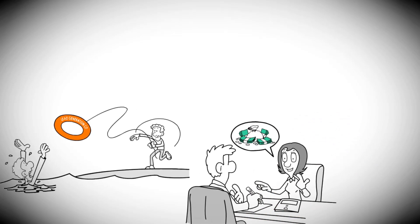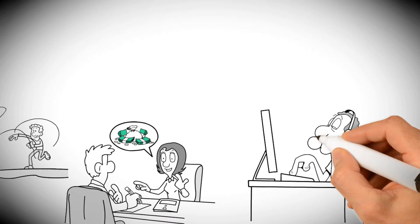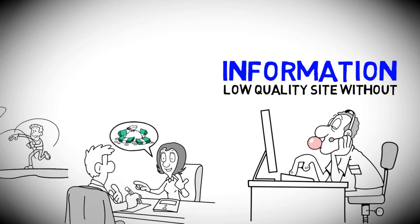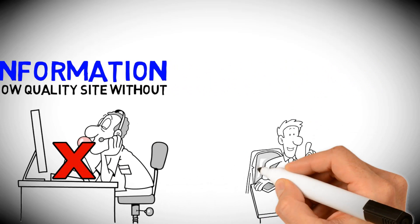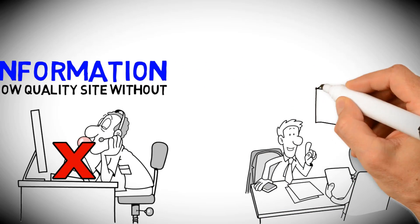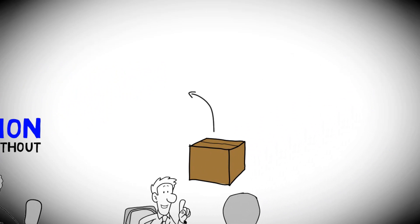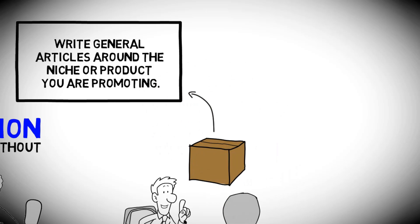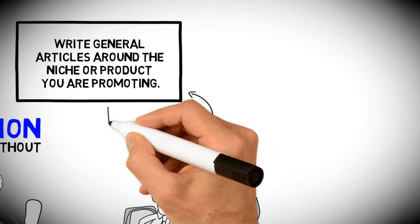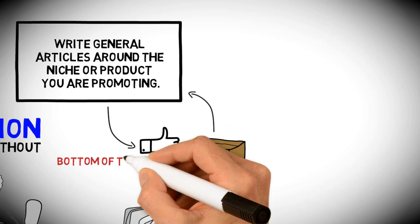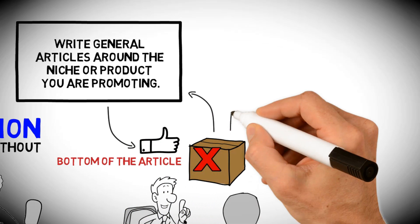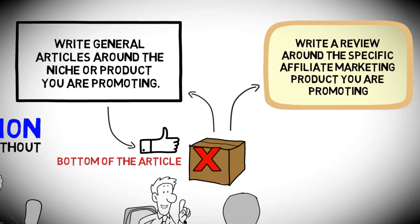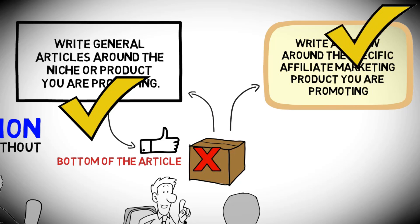The more value you can provide before recommending the affiliate item, the more money you will make. It would be easier if you could just throw up a low-quality site without any useful information, but that is not how it works. There are two ways you can provide value for an affiliate product. The first is to write general articles around the niche or product you are promoting, but not about the product itself. Then you would include a link to that product at the bottom of the article. The other method is to write a review around the specific affiliate marketing product that you are promoting.